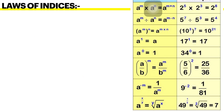The last rule: a raised to x upon y. Here the index is present in fractional form — you can call it rational form. We write it as the y-th root of a raised to x. For example, 49 raised to 1 upon 2 is written as the square root of 49, which equals 7.